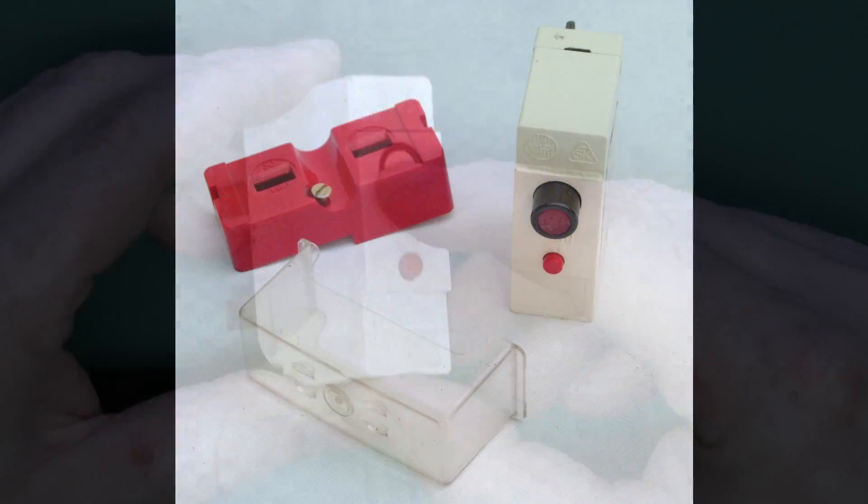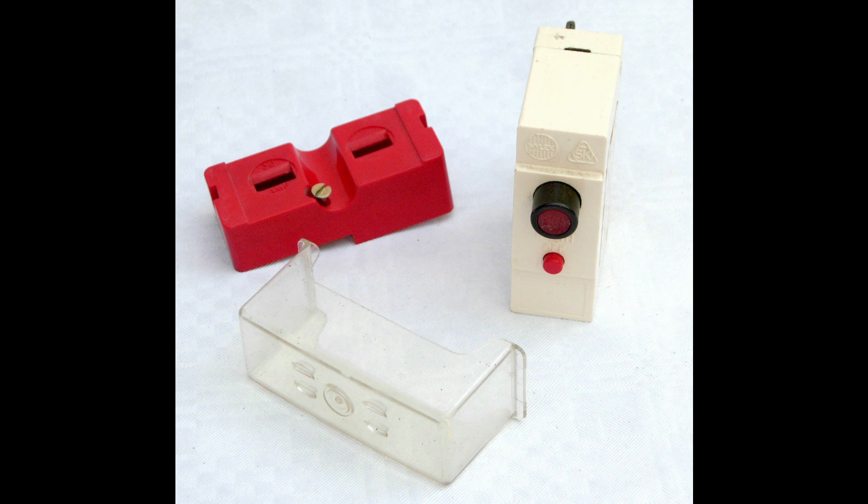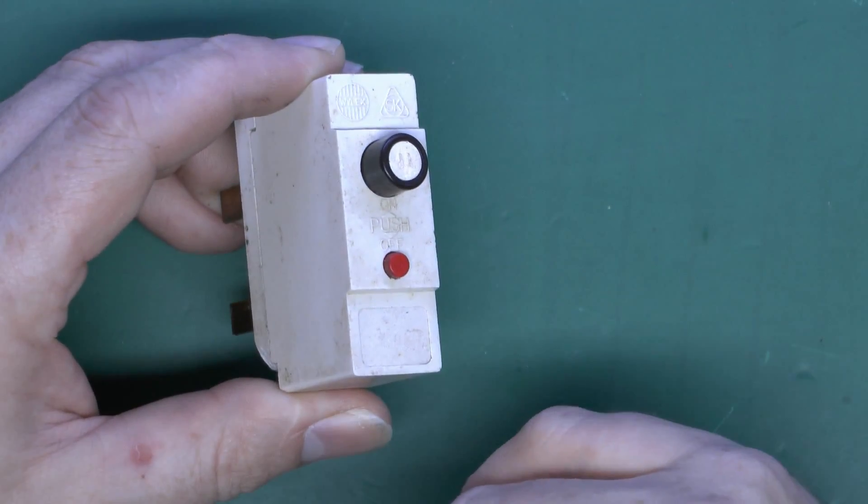And there were some plastic covers you could get, which basically just slid over the whole thing and had a raised section which prevented the button from being pressed. I do have a picture of those, I've actually got one of those here, but they were fairly unusual. Nevertheless you could get those to avoid the problem of it being just turned off accidentally.